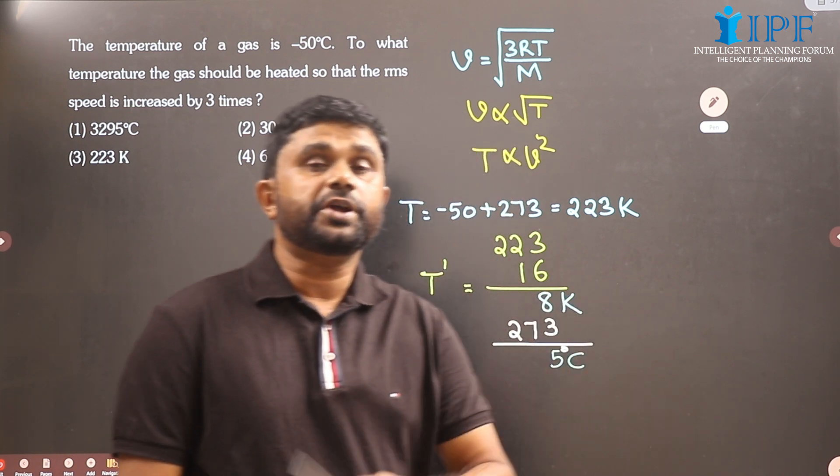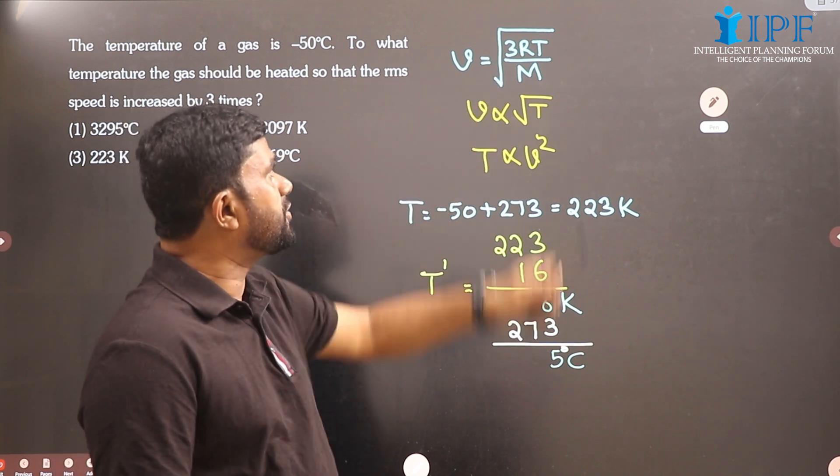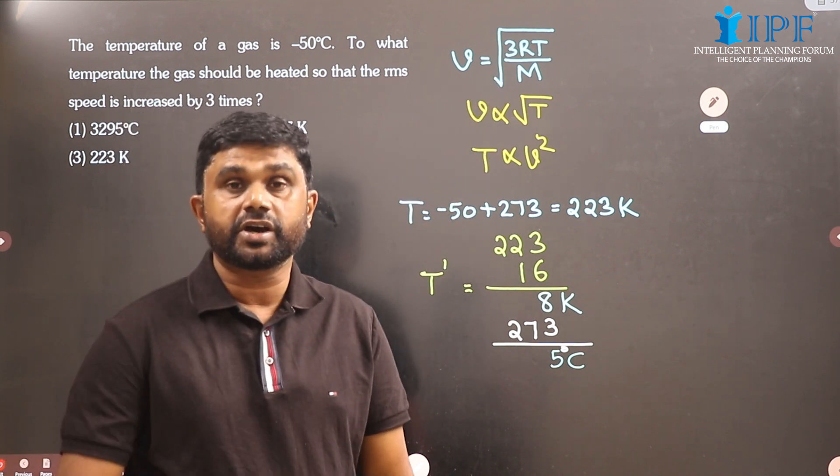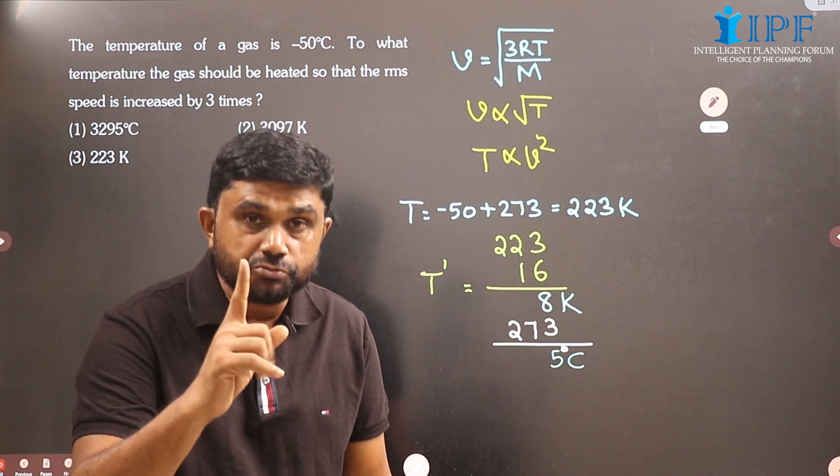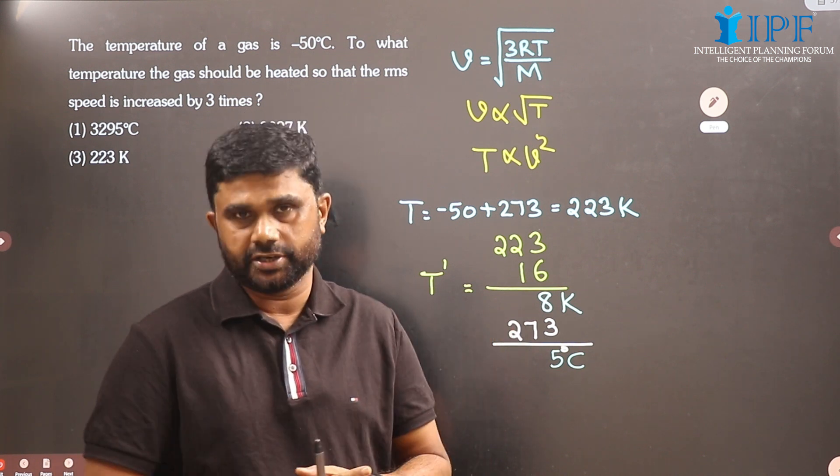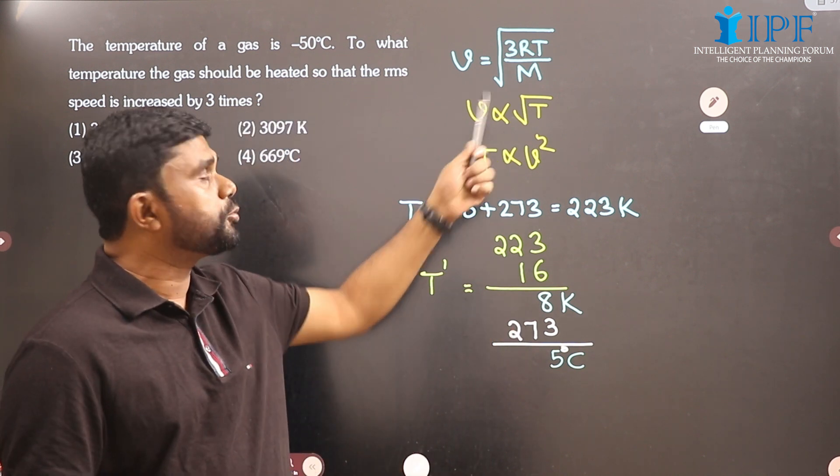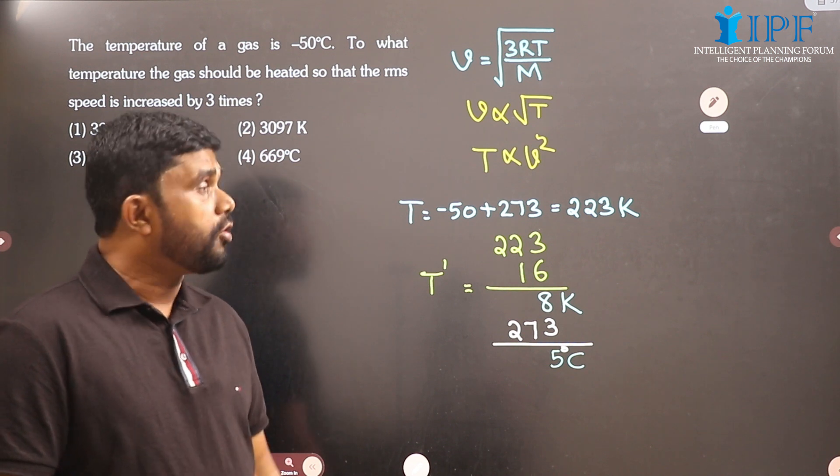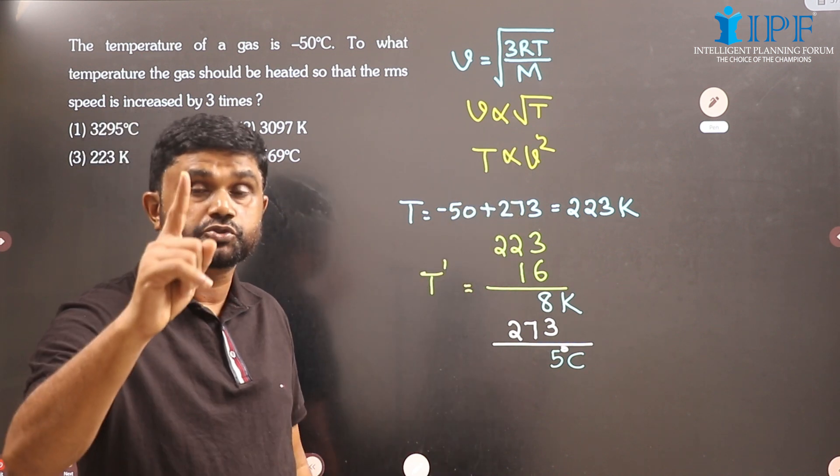The RMS speed of gas molecules is given by V equals root of gamma RT by M, where capital T is the absolute temperature or temperature in Kelvin. We can say V is directly proportional to square root of temperature, or temperature is directly proportional to square of the speed.